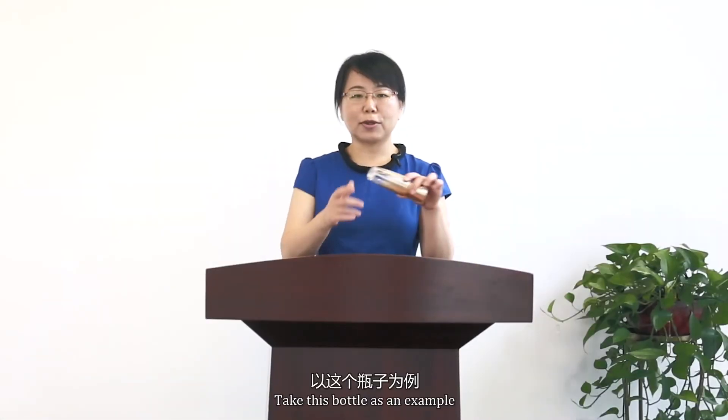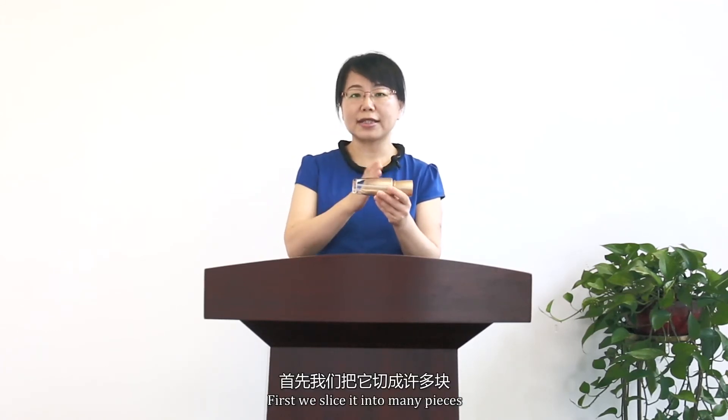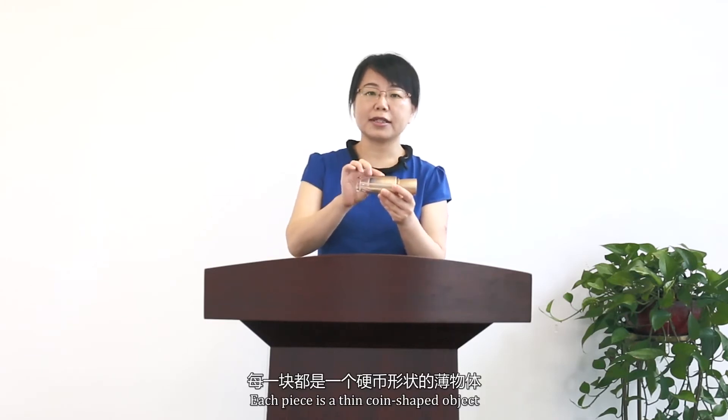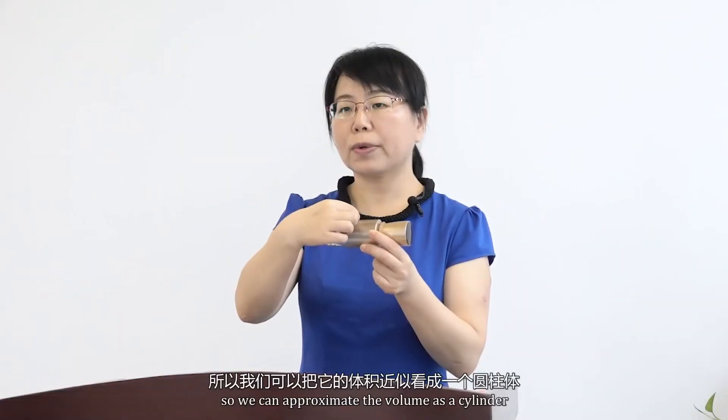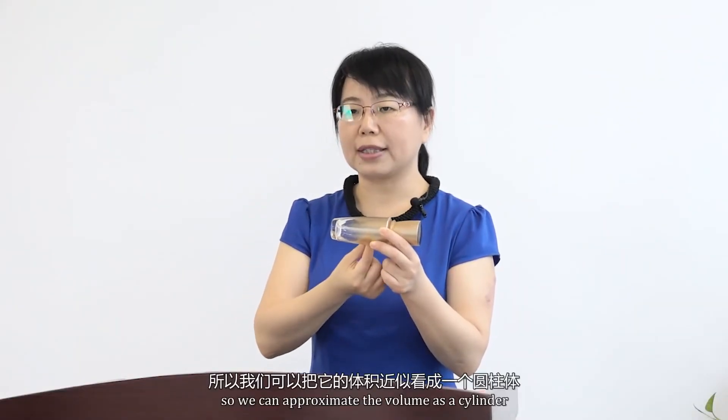Take this bottle as an example. First, we slice it into many pieces. And each piece is the same coin-shaped object. So we can approximate the volume as a cylinder.